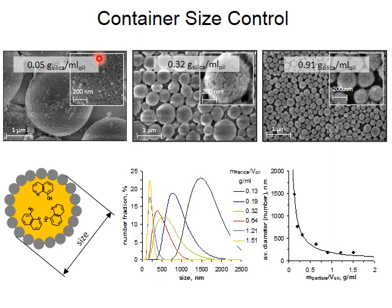Here you can see electron micrographs of the capsules manufactured by our method. We used ultrasound to make very small capsules. The capsules are covered with a dense crust of silicon dioxide nanoparticles, and the size of the capsules can be well adjusted by changing the amount of silicon dioxide nanoparticles. The smallest capsules we obtained were only 200 nanometers in diameter.